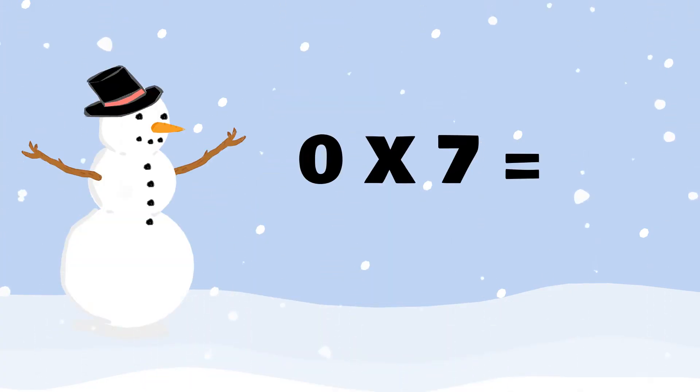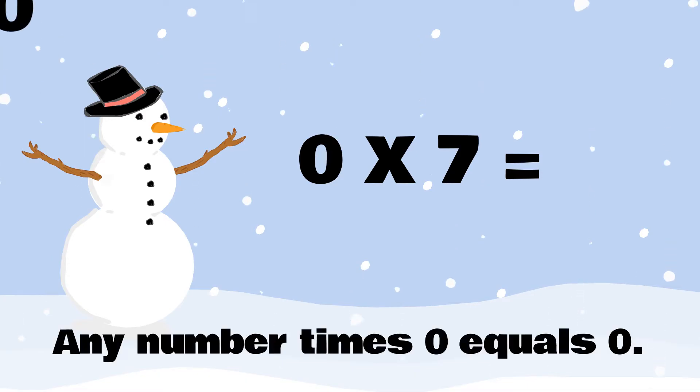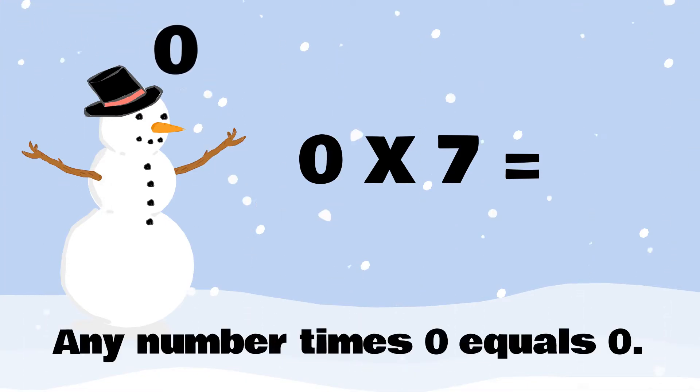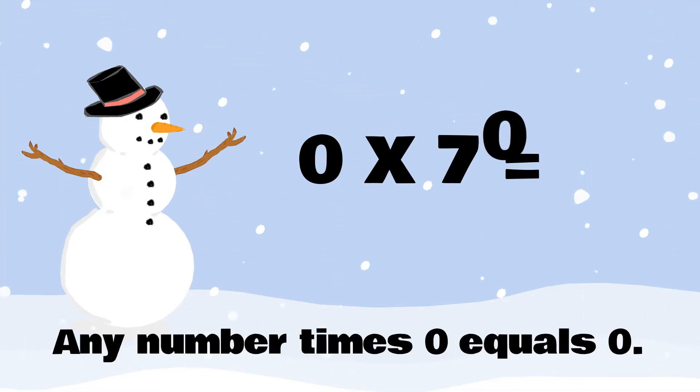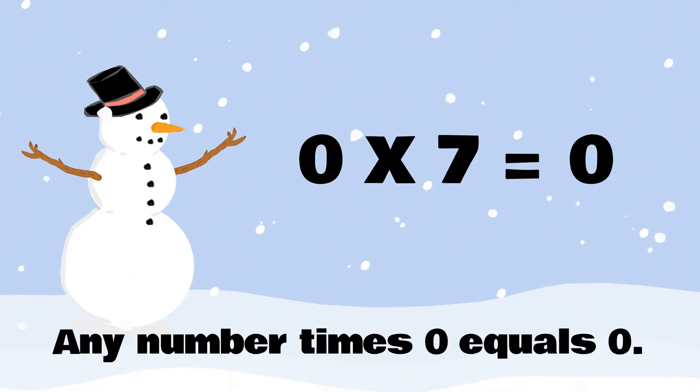What does 0 times 7 equal? Any number times 0 equals 0, so 0 times 7 equals 0.